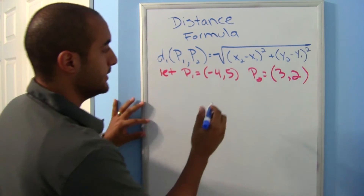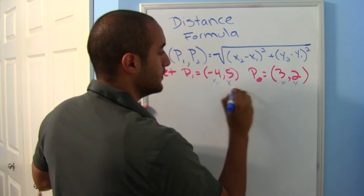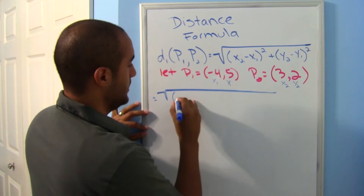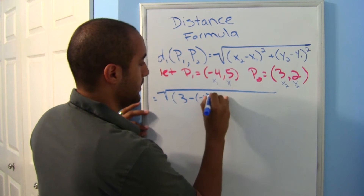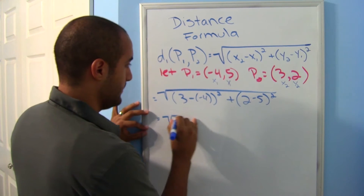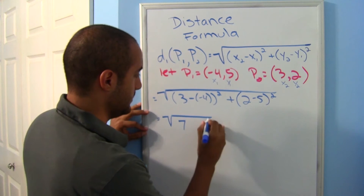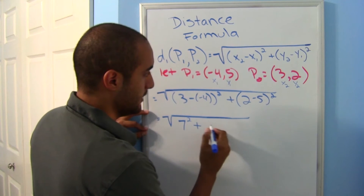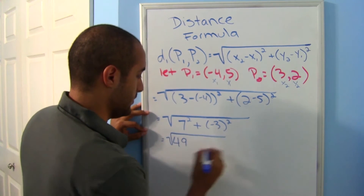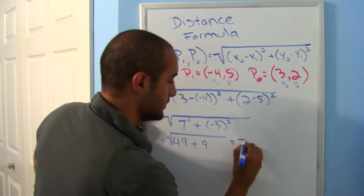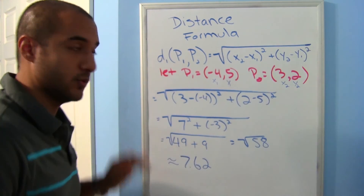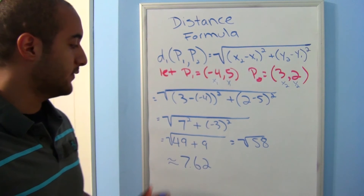Let's try another example. Labeling x1, y1, x2, y2, the substitution looks like: the square root of (3 − (−4))² + (2 − 5)². That is 7² + (−3)², so 49 + 9, which is the square root of 58, which is about 7.62. You can get decimal answers here — don't let that scare you, it's the right answer.